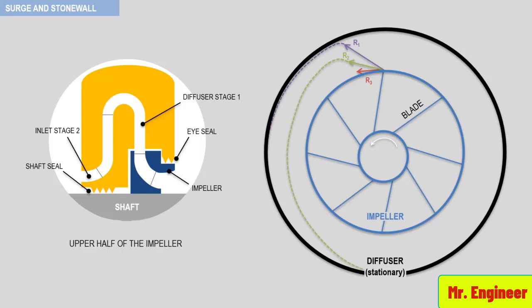At surge flow, the velocity of the wheel will be so low that the path of the gas will not leave the diffuser, as it is the case for R3.